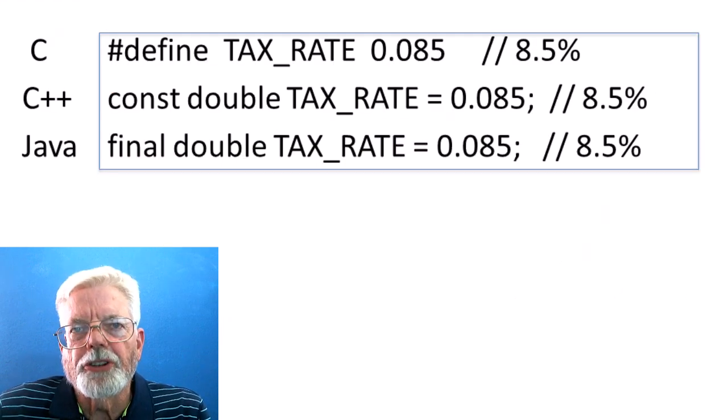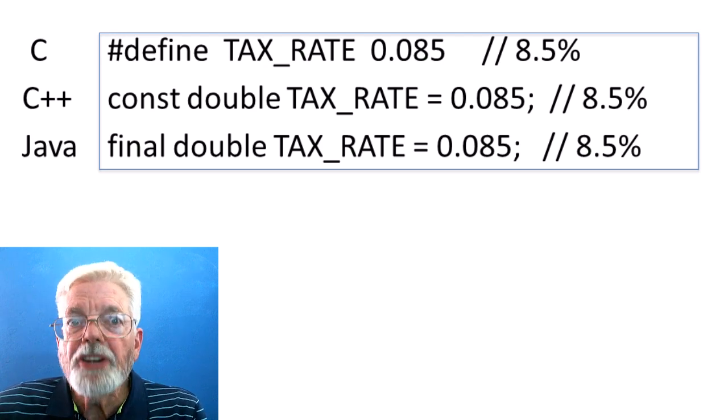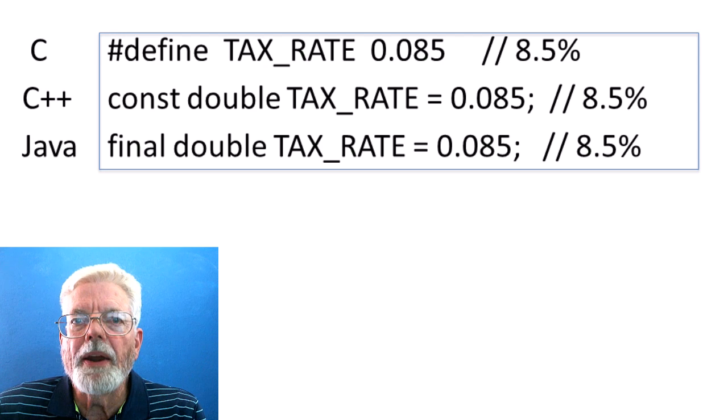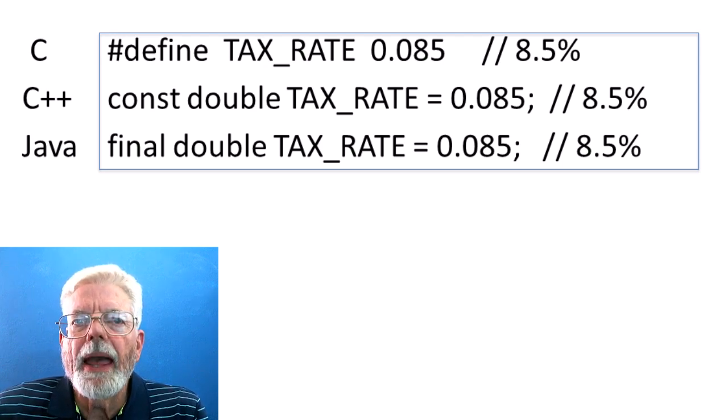Variables and constants are similar except that once defined, the value of a constant cannot be changed by the program when it is running. By convention, constants are defined using only capital letters and the underscore character.